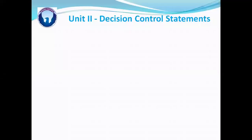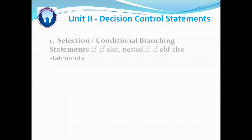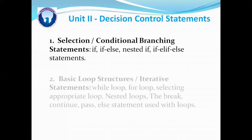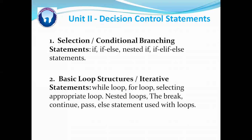Then we'll proceed to unit two: decision control statements. In this unit, initially we are going to learn selection or conditional branching statements like if, if-else, nested if, if-else-if, etc. Then we are going to see the basic loop structures or iterative statements provided by Python, and these are the while and for loop.